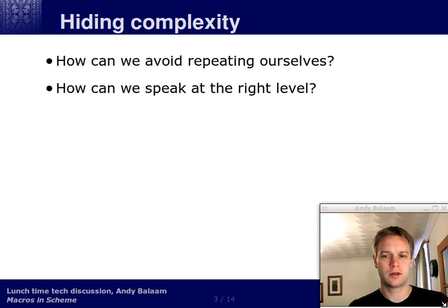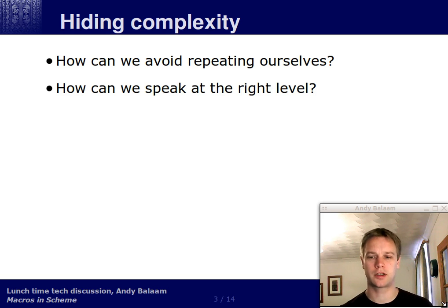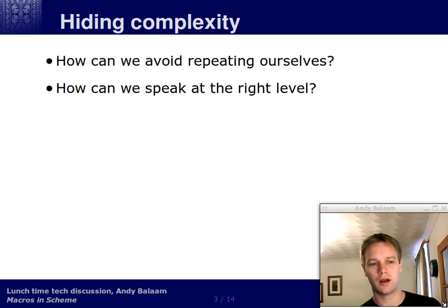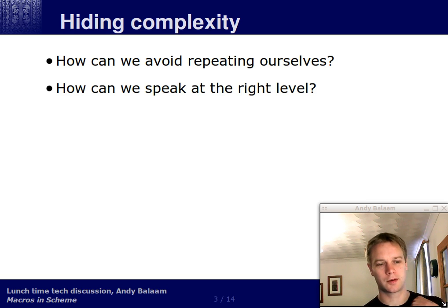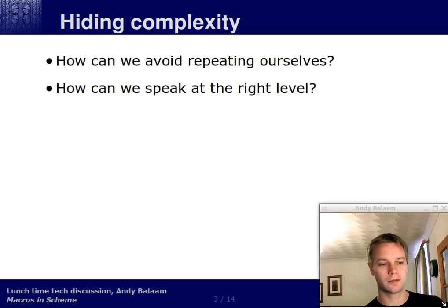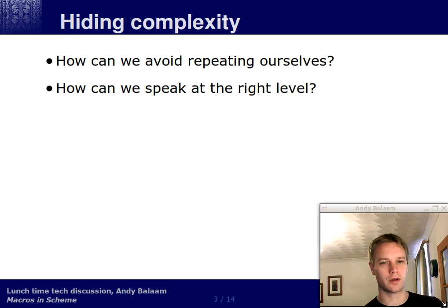What we would like to do is avoid repeating this cond expression with the zero, positive, and else parts every time we want to do something involving zero, positive, or negative. Instead we just want to give this concept a name and use it without re-expressing it every time. The reason for that is that we don't want to have to think about it — the implementation of zero/positive/negative is really not of interest to us. We should be able to do it once and leave it at that.